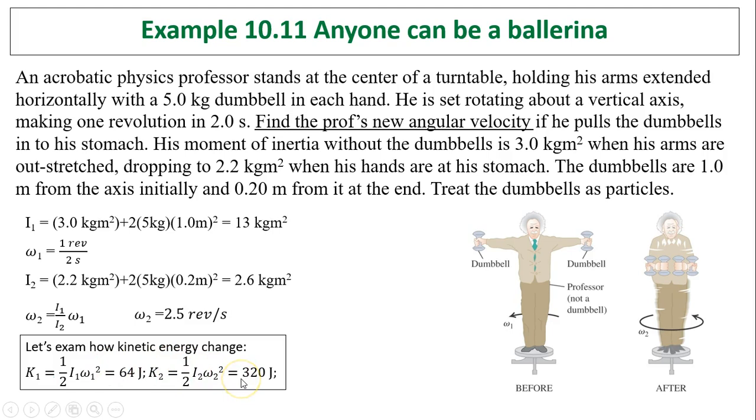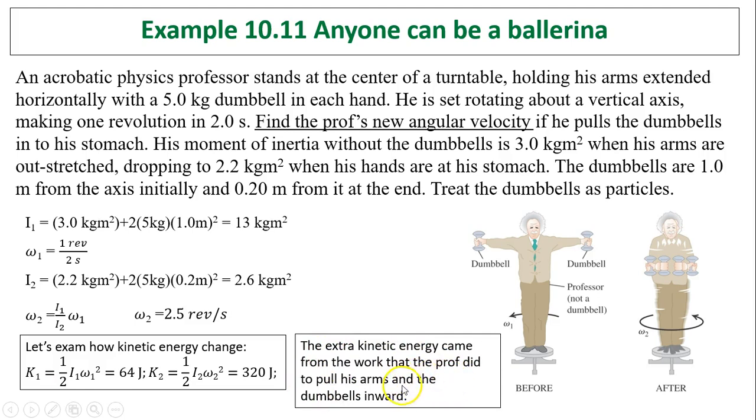Now let's examine how the kinetic energy changes. Before, K1 equals one half I1 omega 1 squared. You put I1 is 13, omega 1 is 0.5. That gives you 64 joules. By the way, to find the joules, you have to change revolutions to radians. And K2 actually equals 320 joules. As you can see, the kinetic energy after is much bigger than before. Why is that? The actual kinetic energy came from the work that the professor did to pull his arm and dumbbell inward. That's why he did work. So work equals change in kinetic energy. As a matter of fact, you can figure out how much work. The work he has done is 320 minus 64 joules.